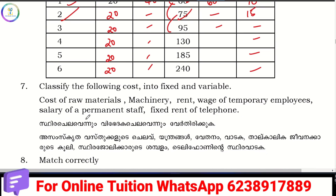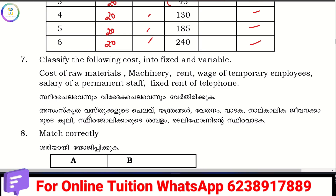Now classify the following into fixed and variable costs. Raw materials are variable. Machinery is fixed. Transportation charges are variable. This is the classification of fixed and variable costs.